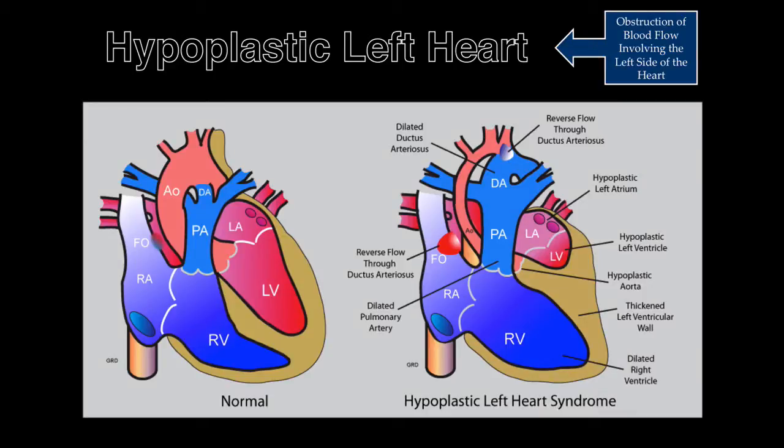The hypoplastic left heart syndrome occurs in 1 in 10,000 live births. It is associated with the hypoplastic mitral valve, left ventricle, and aorta. It may be present during the first and second trimesters of pregnancy or may evolve as a result of severe aortic stenosis.